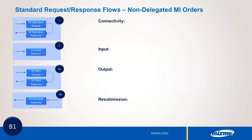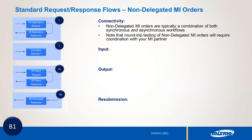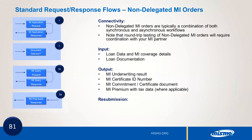Since the non-delegated order process is more complex, here's a summary of what you should remember. Non-delegated MI orders are typically a combination of both synchronous and asynchronous workflows. Round-trip testing of non-delegated orders will require coordination with your MI partner so that a response can be manually generated. Input includes loan data, MI coverage details, and loan documentation, while order output includes the result of the MI underwrite, the MI certificate ID number, a commitment certificate document, and MI premium with tax data where applicable. Non-delegated MI orders may typically be resubmitted; however, each resubmission should include the MI certificate ID number provided by the MI partner during the initial order.